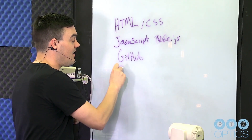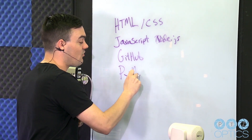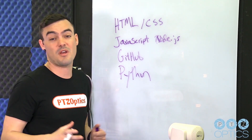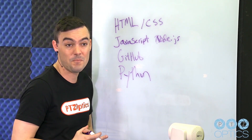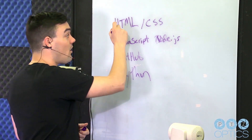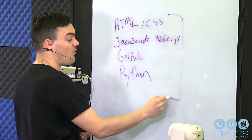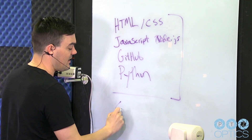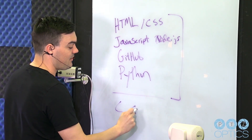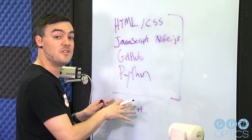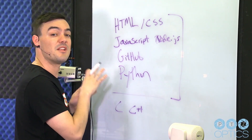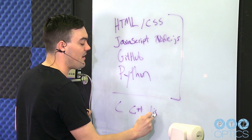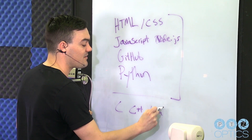Then we're going to get into Python, which is a really great programming language for beginners but also incredibly powerful. In the future we're hoping to release C and C++. We do have open source code for those, and we're also planning to include Visual Basic in the future.